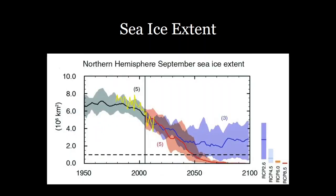Using climate models, we can predict how much sea ice melting there will be under different climate scenarios. You can see the decrease in sea ice extent already recorded, and then climate models show either the business-as-usual scenario in red, or the rapidly-addressing-carbon-emissions scenario in blue. Under a business-as-usual scenario, summertime sea ice will be completely gone by 2050.